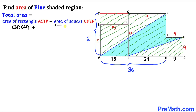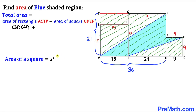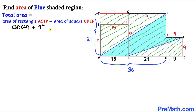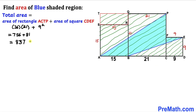Now let's find the area of square CDF. Using the area of a square formula — S squared — our side length is 9 units, so the area of square CDF is 9 squared, which is 81. Adding 756 and 81, our total area turns out to be 837 square units.